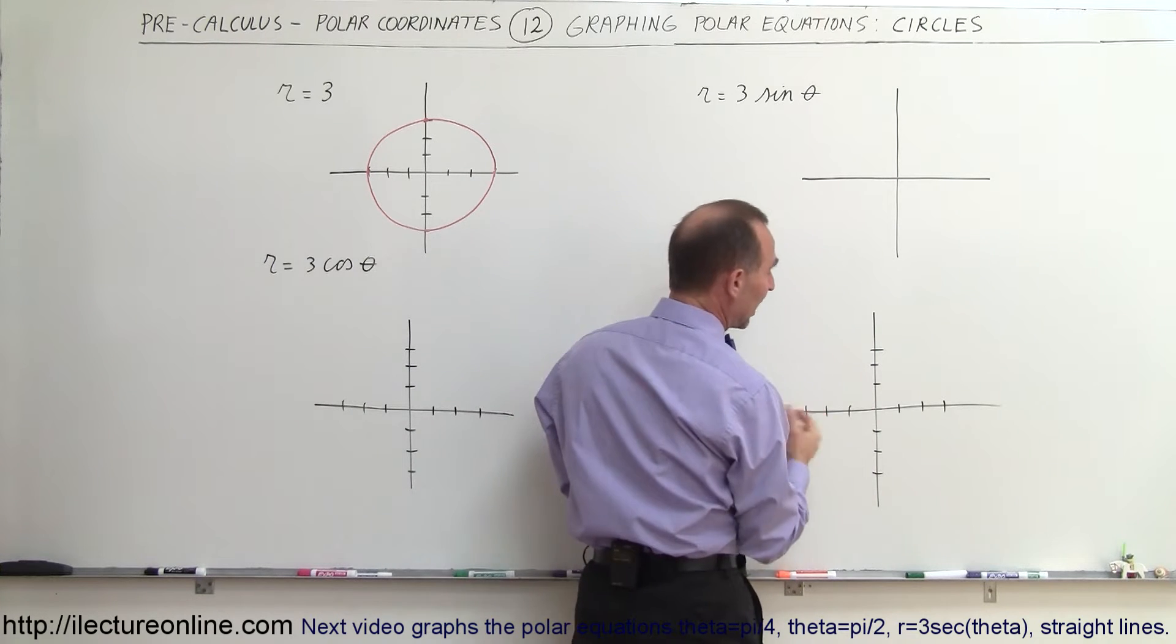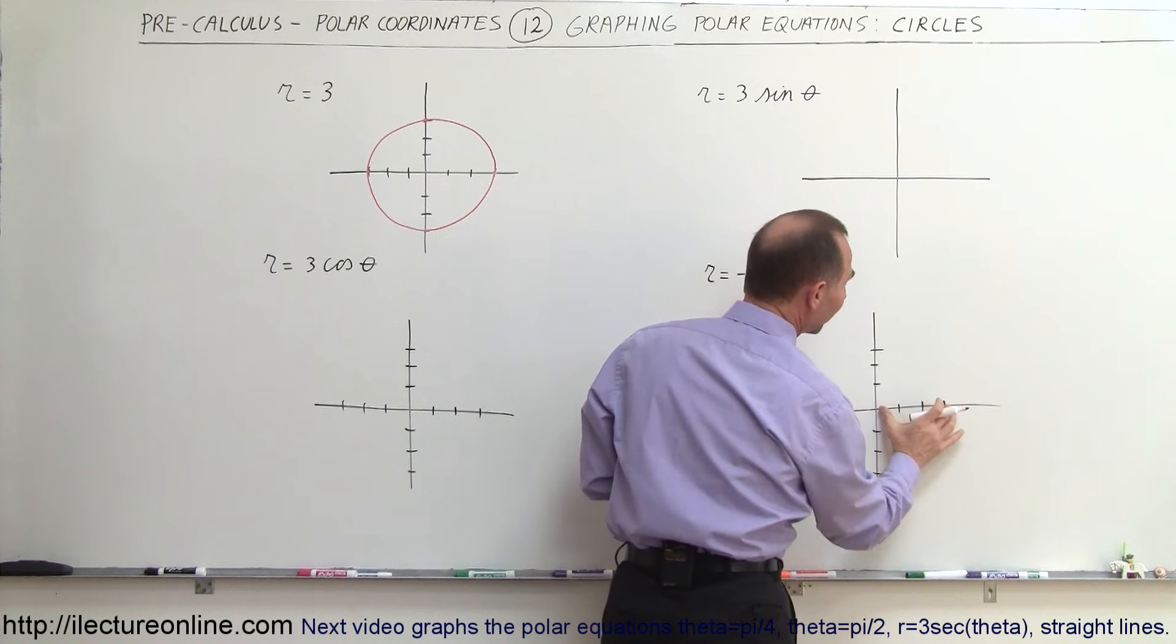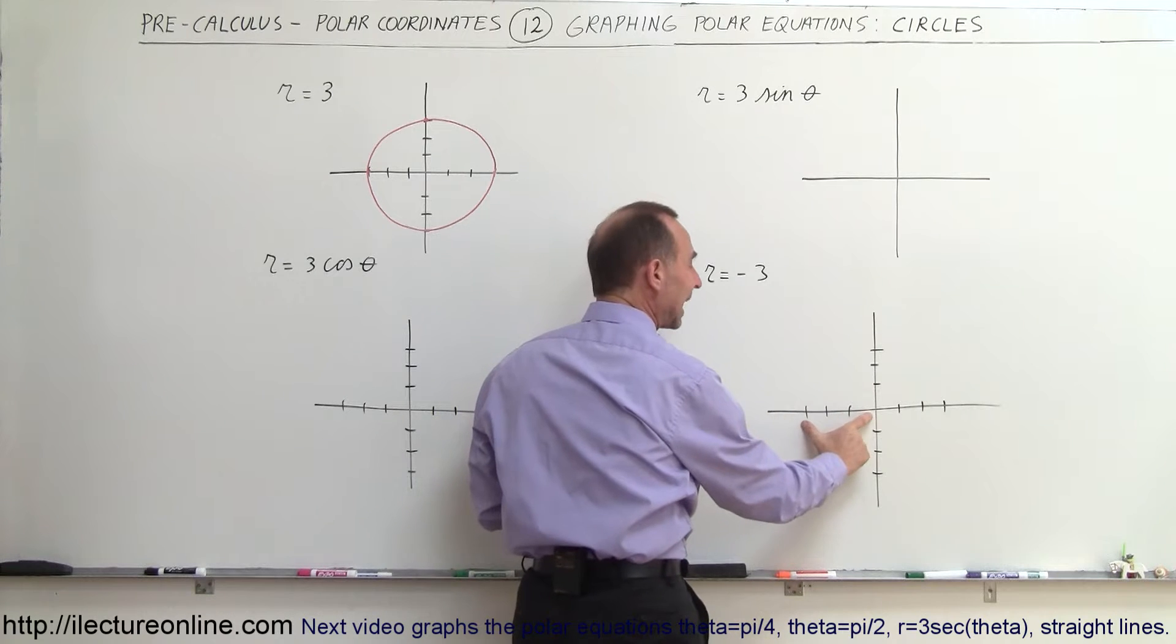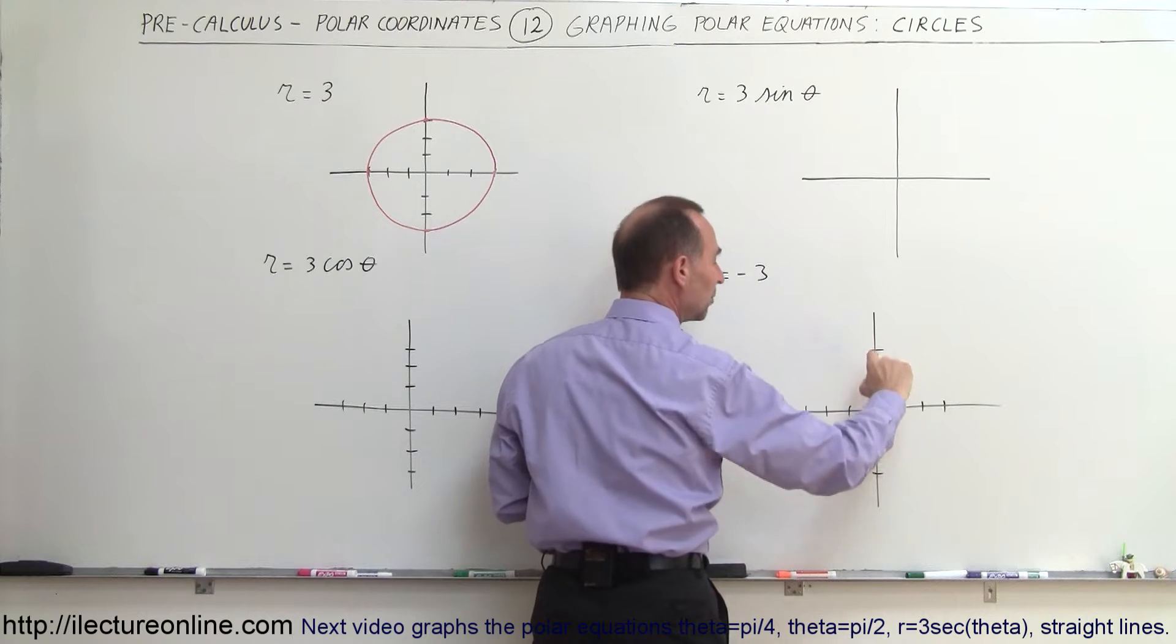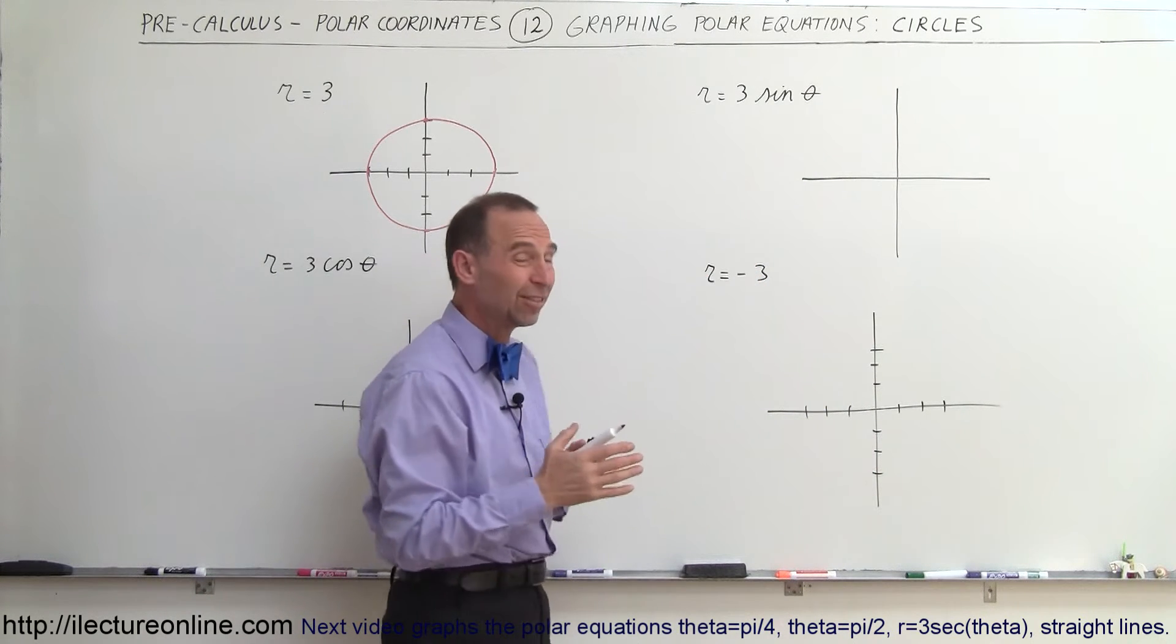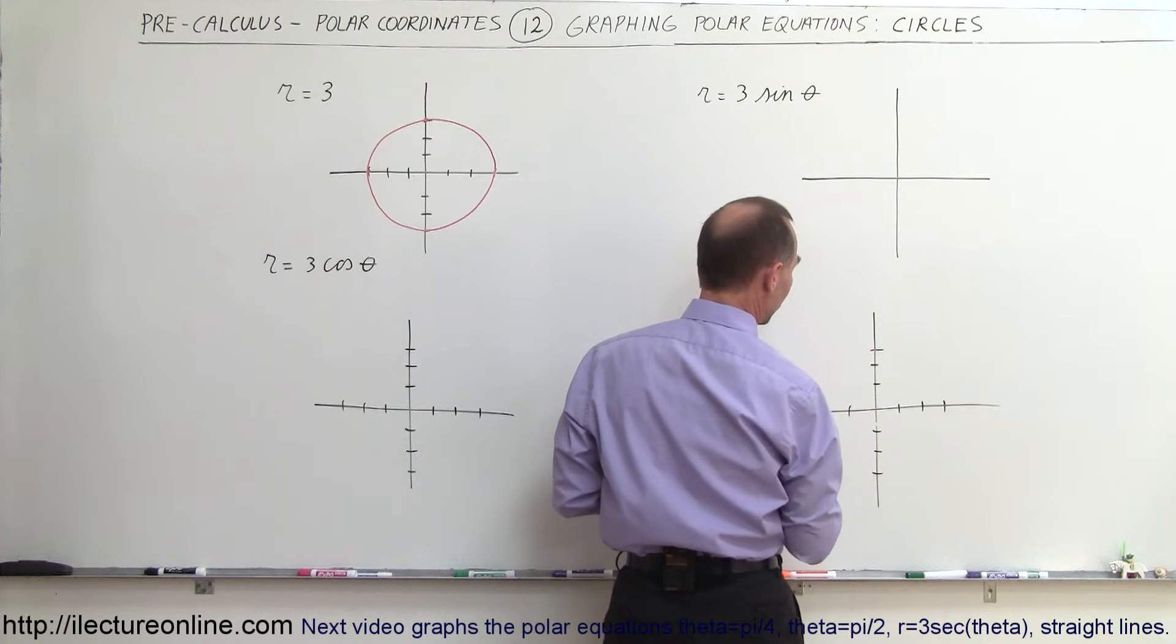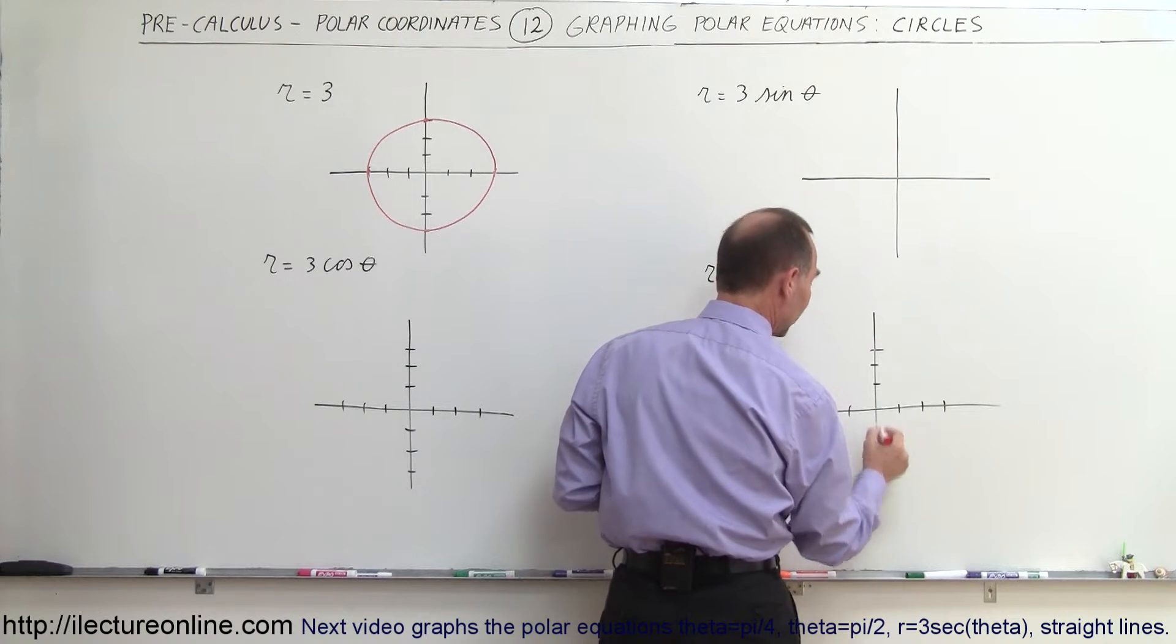Well, for any angle, for example, if I point at an angle of 0 degrees, that would be this point right there, but at this angle, r is negative 3, which means if I'm pointing in this direction, r would be in the opposite direction, would be negative 3 from that direction. Or if I point in this direction, r would be negative 3 over there.